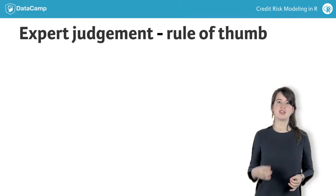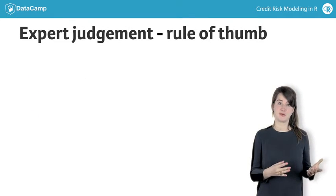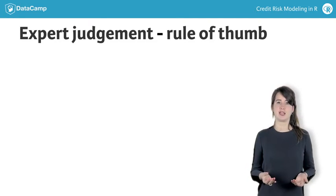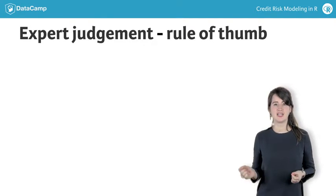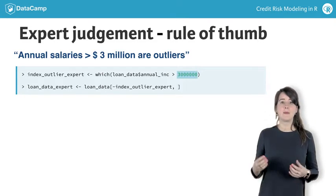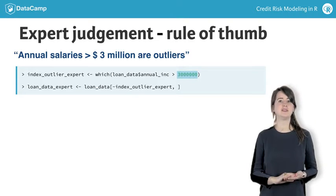Expert judgment could be used if the data scientist is considered an expert in the domain of credit risk modeling. He can then judge that an annual wage above, let's say, $3 million, must be an error and should be deleted from the data set.